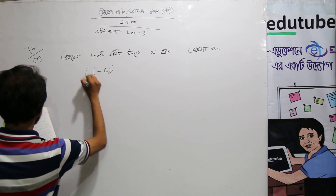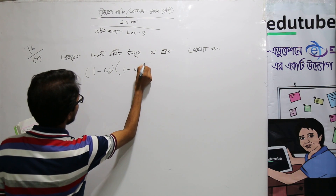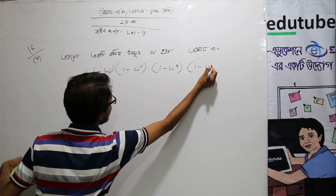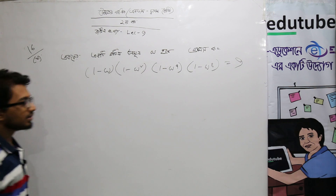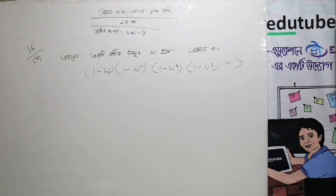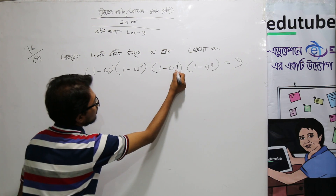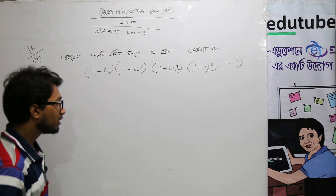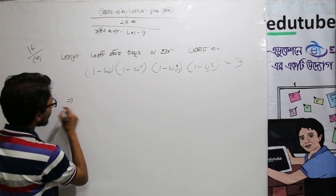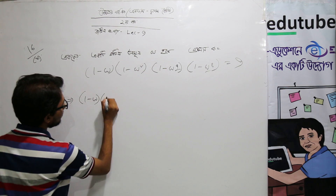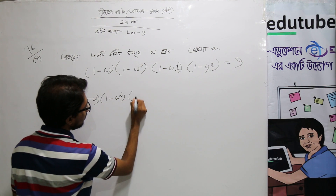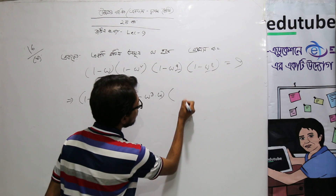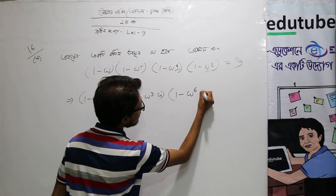1 minus omega, 1 minus omega squared, 1 minus omega to the power 4, 1 minus omega to the power 8 equals to 9.